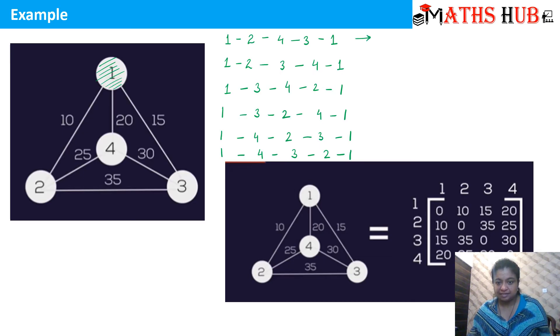1 to 2 is 10. 2 to 4 is 25. 4 to 3 is 30. 3 to 1 is 15. So that turns out to be 30 plus 10, 40. 40 plus 25, 65. 65 plus 15 is 80.